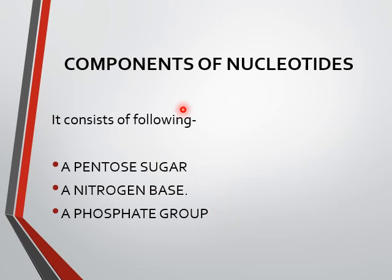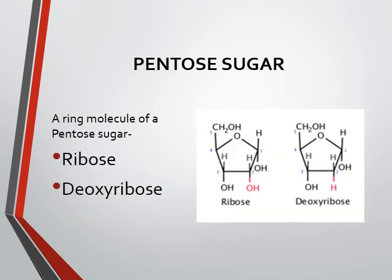Components of nucleotides. Every nucleotide consists of three components: number one is pentose sugar, which means made up of five carbons; number two is nitrogen base; and number three is a phosphate group. First, we are taking the pentose sugar — a ring molecule of five carbon pentose sugar.